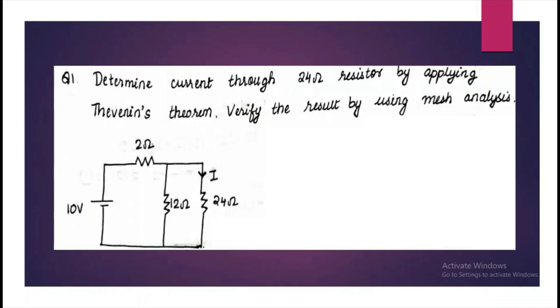Let's do a problem based on this. We have to determine the current through the 24 ohm resistor by applying Thevenin's theorem, and then verify the result by using mesh analysis.